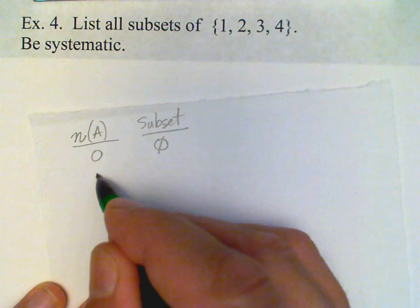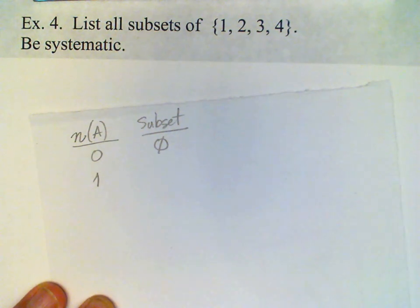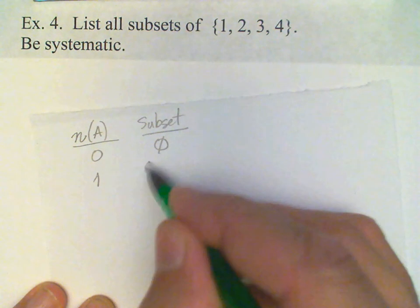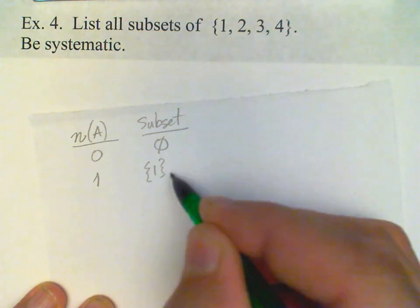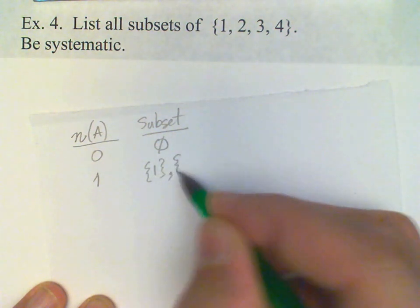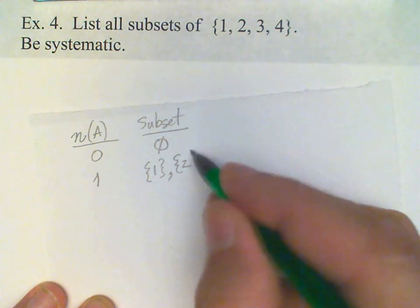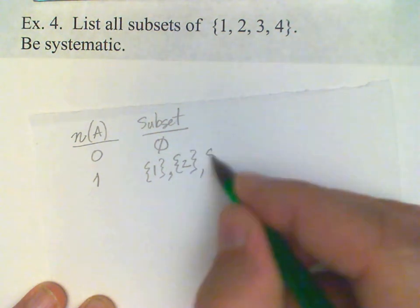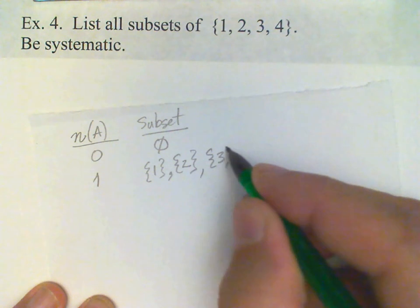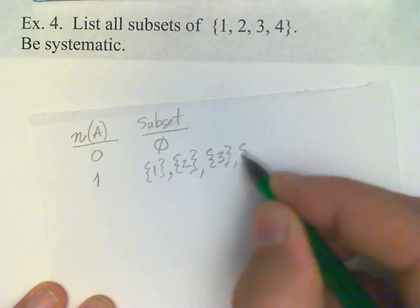If the cardinal number is 1, then there are four possible subsets, namely the set with element 1, the set with element 2, the set with element 3, and the set with element 4.